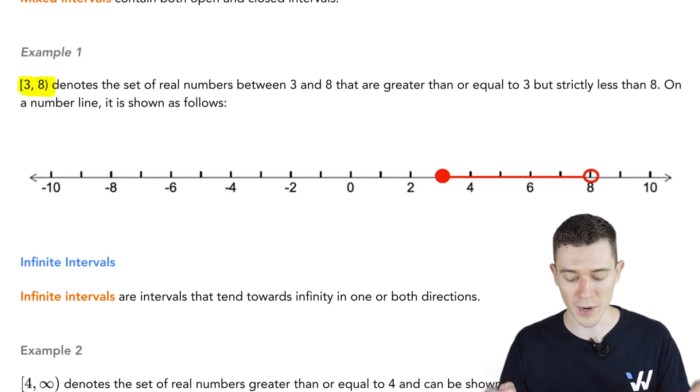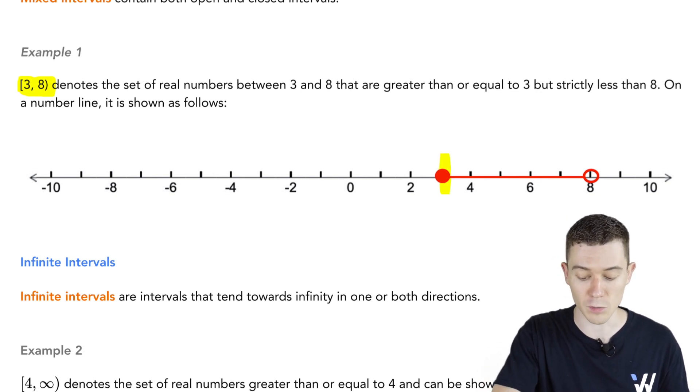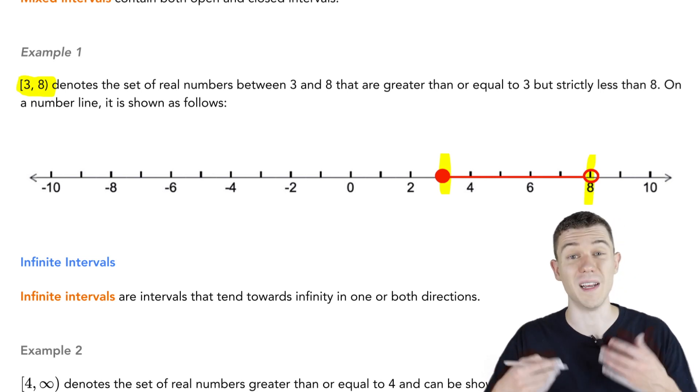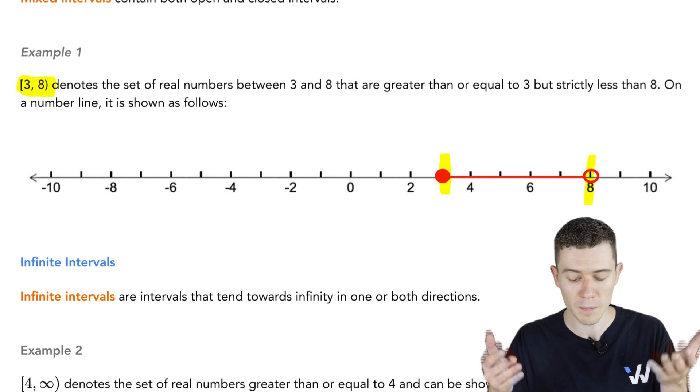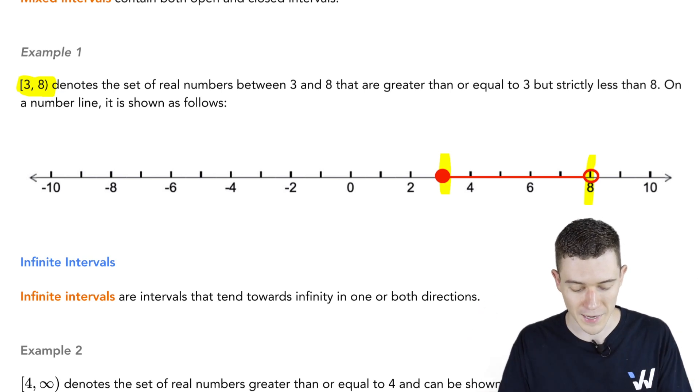Notice how in red here, the 3 is a closed circle. It's filled in. We're including that number in our set. And 8 is open. 8 is not in our set. So this represents all the numbers from 3 to 8, including 3, but not including 8.